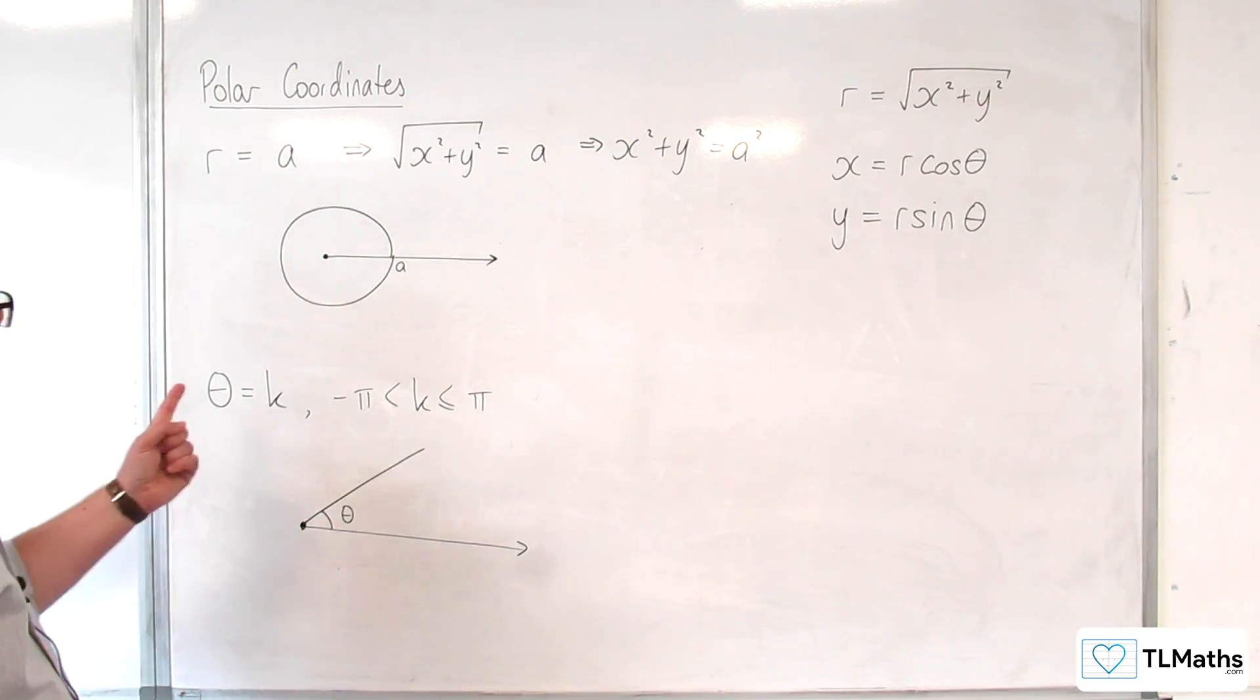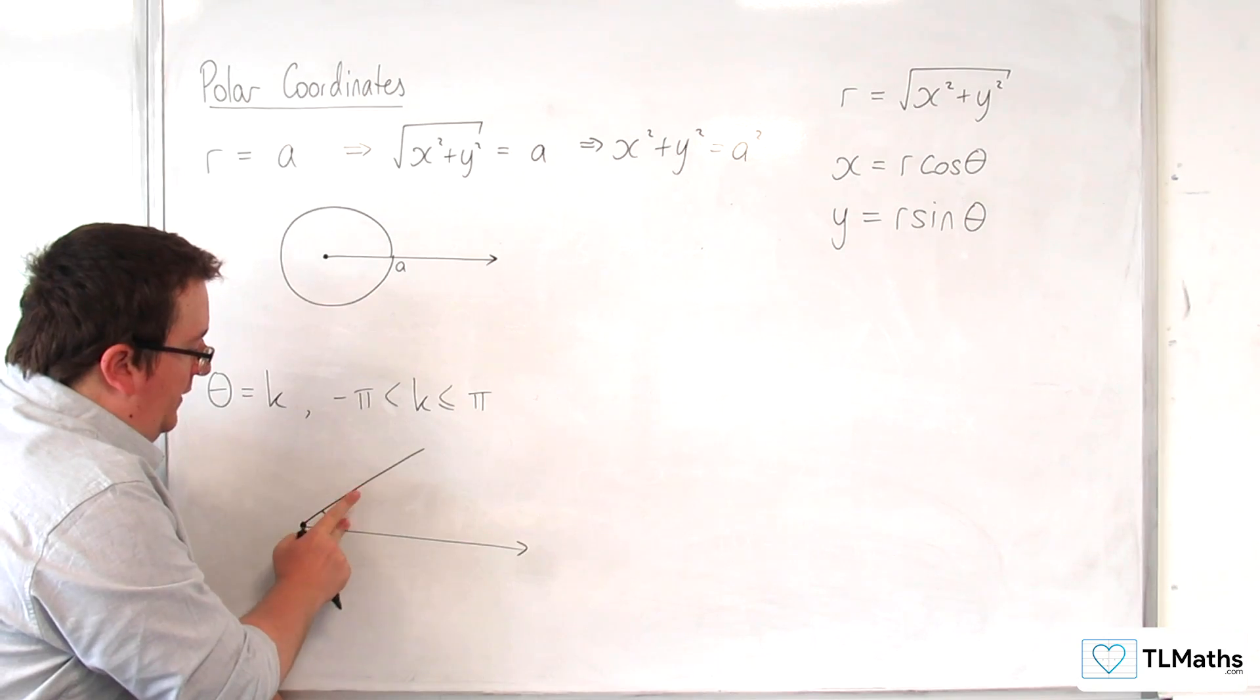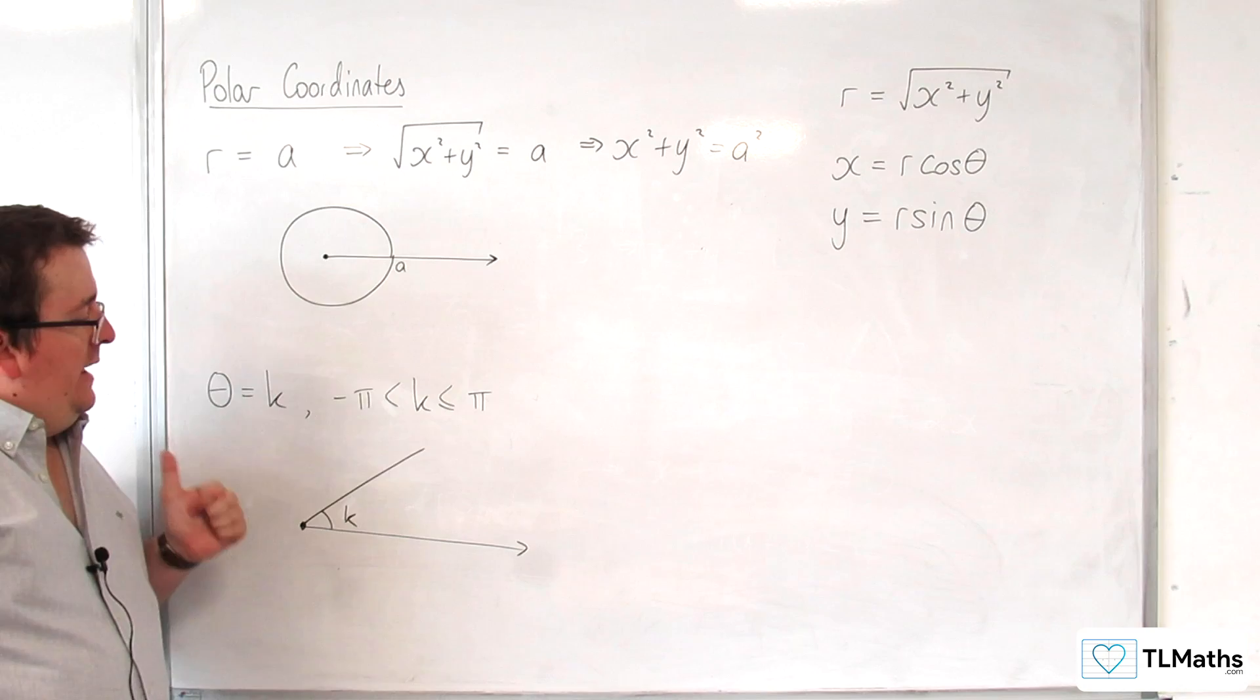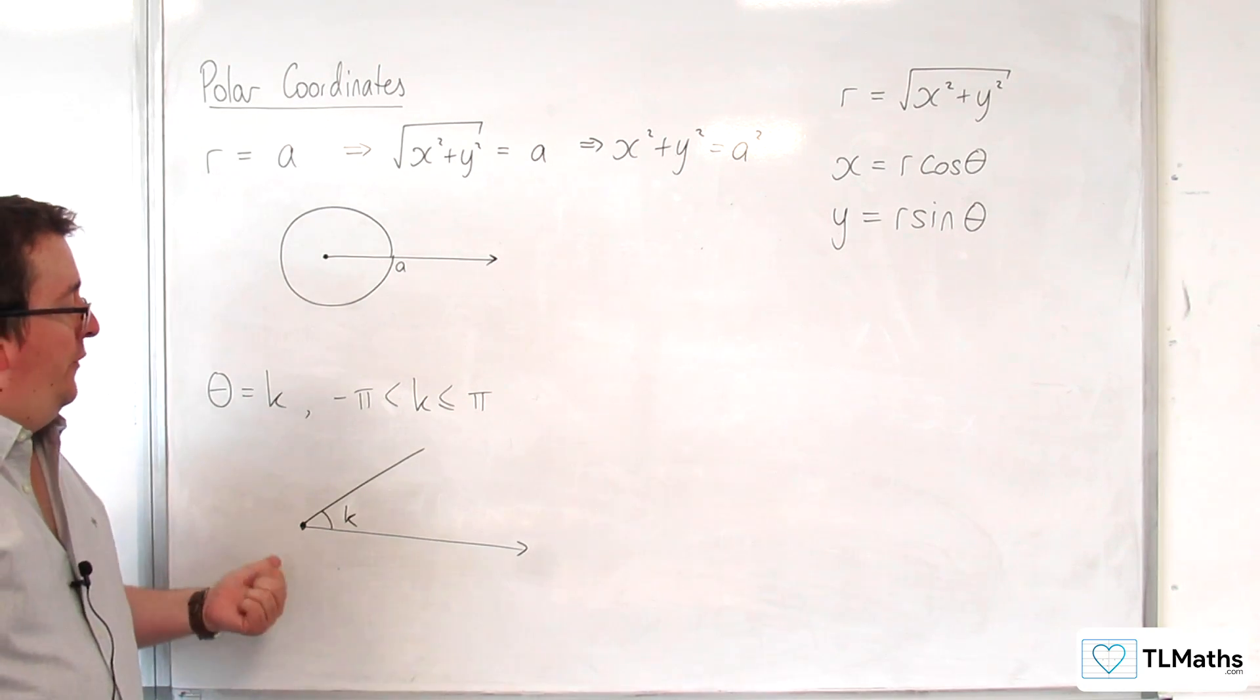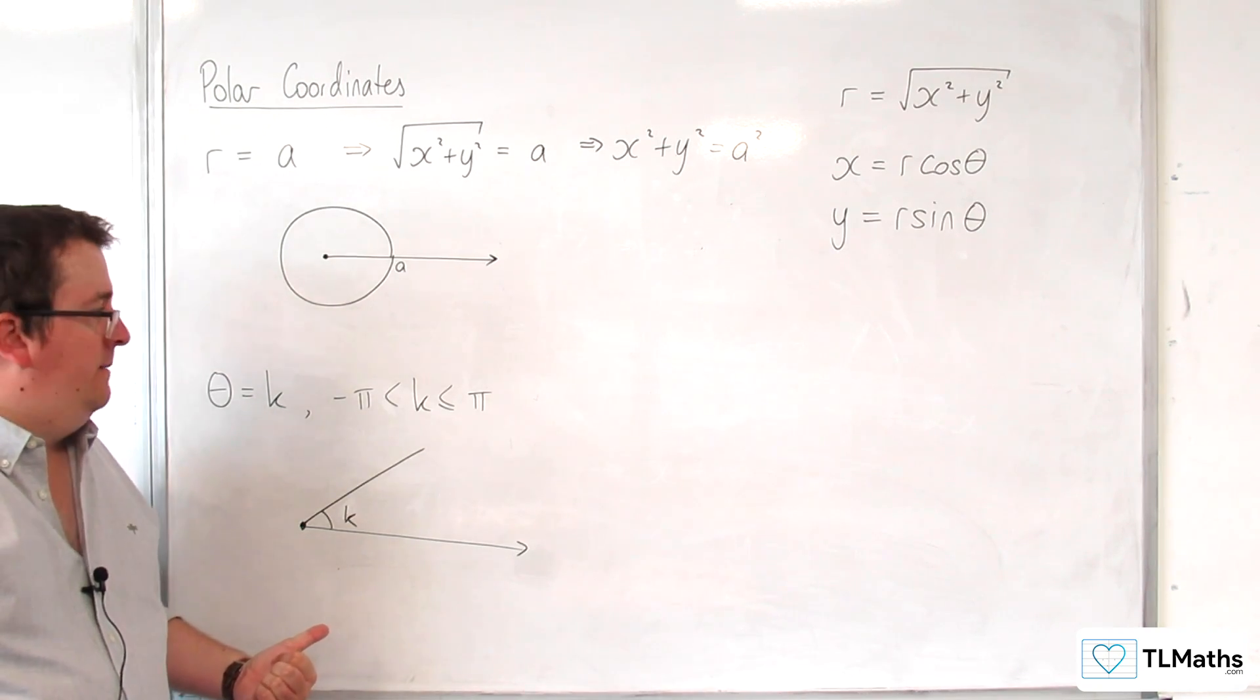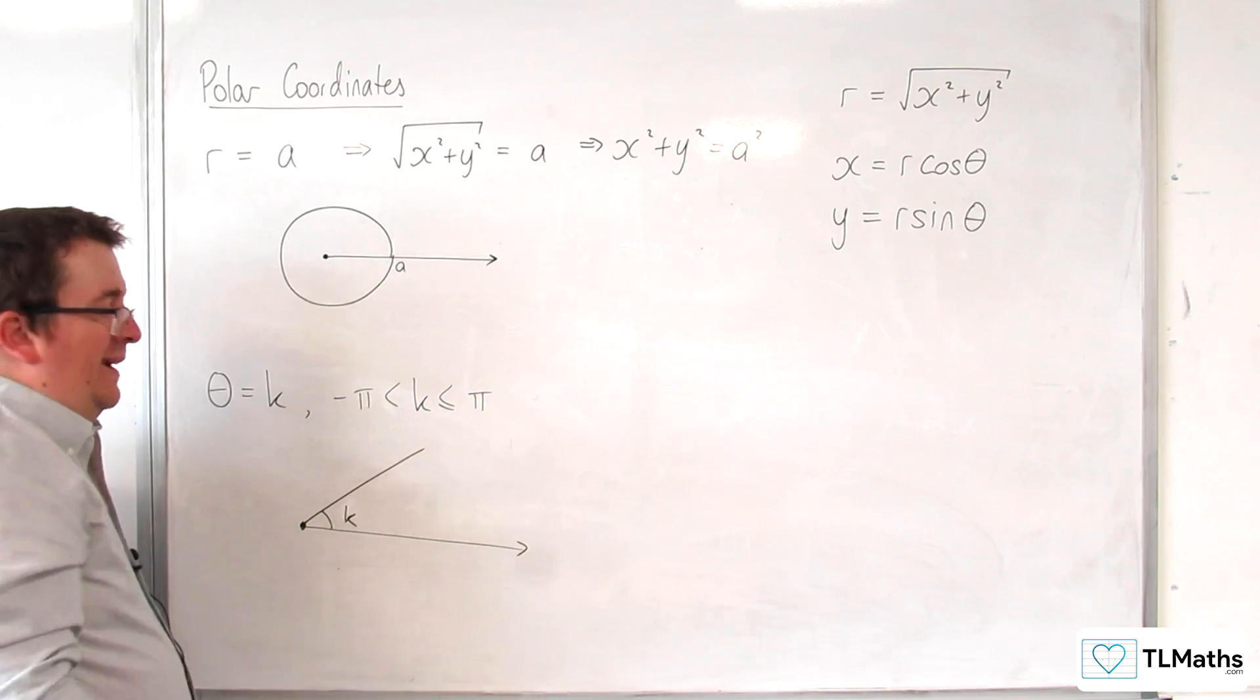And so what we get is that this describes - you can say that's k if you like instead - a half line through the pole, and this is very similar to what you met in Argan diagrams previously. So a half line through the pole with angle k.